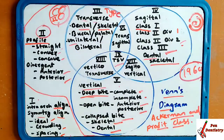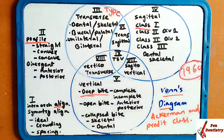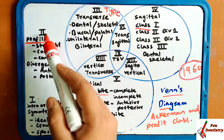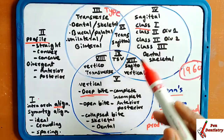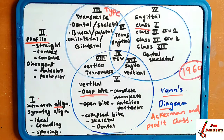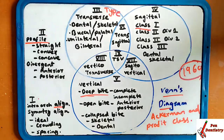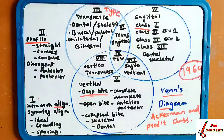He has classified the Venn diagram into five groups: group one, group two, group three, group four, and group five. Now we are going to see each of these groups. The first one is alignment.